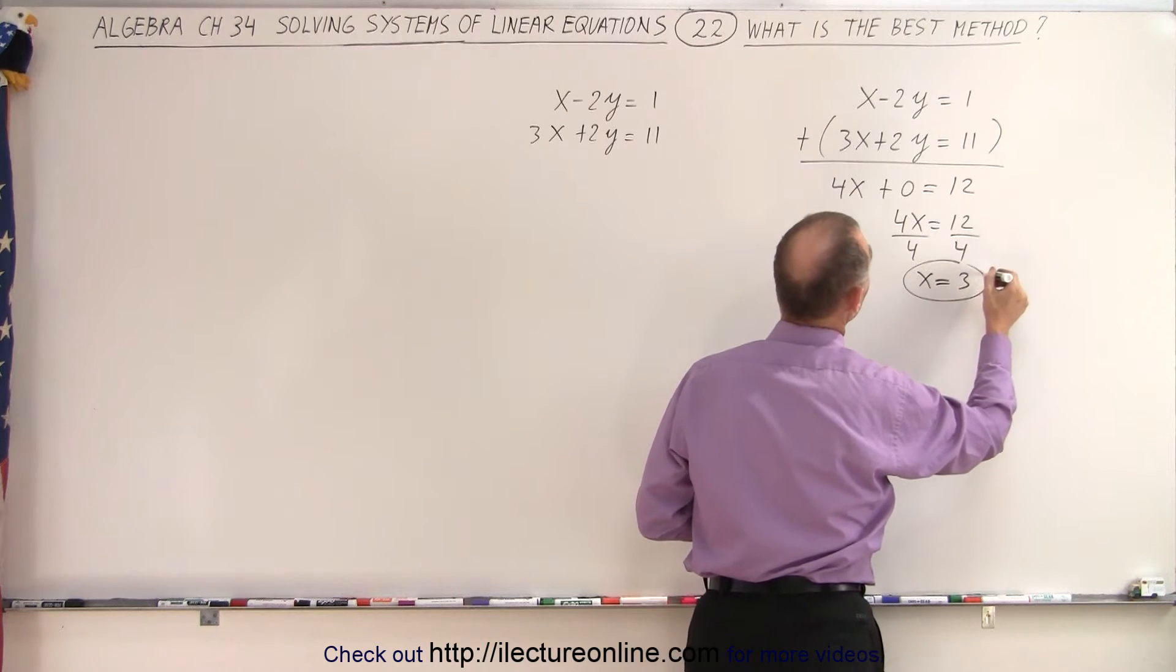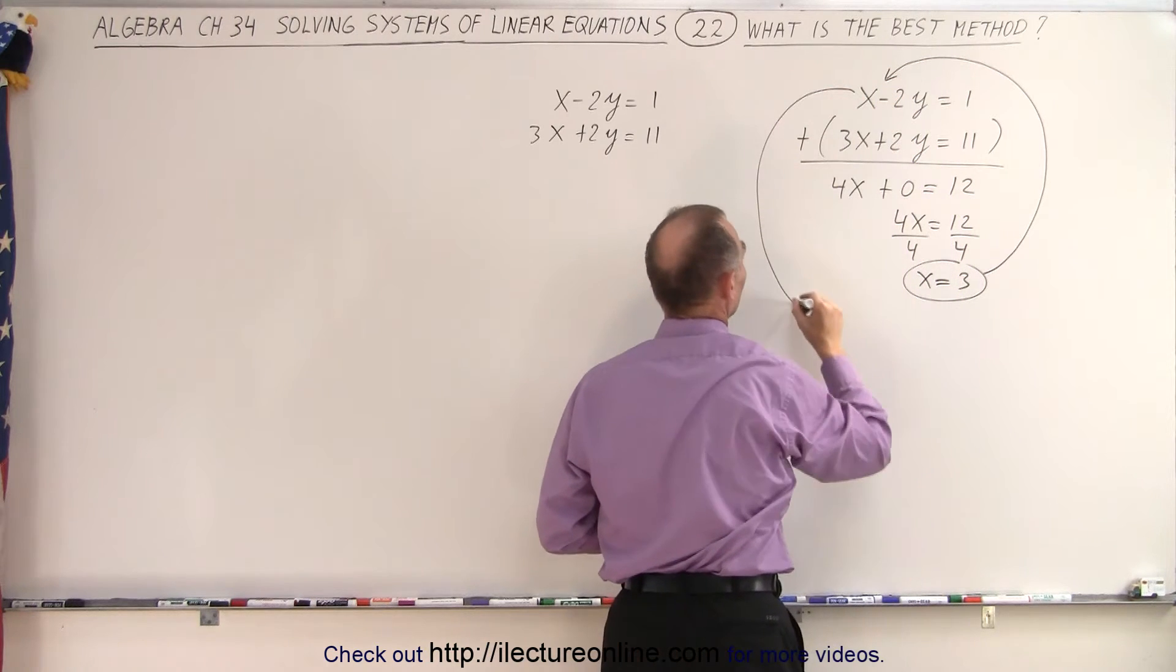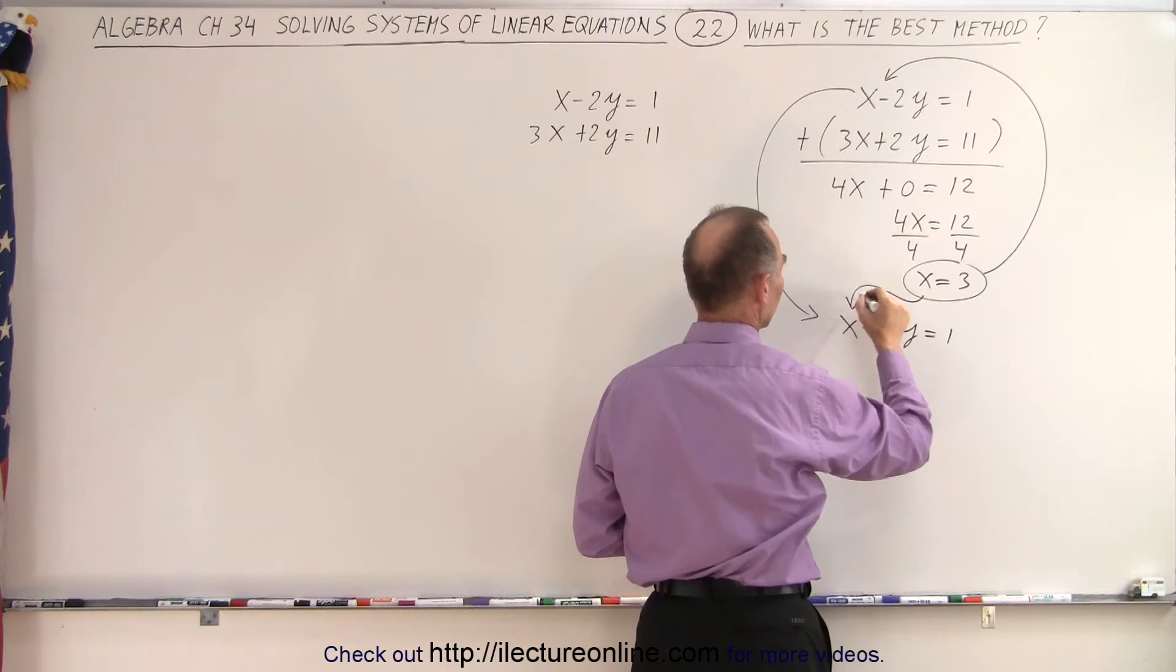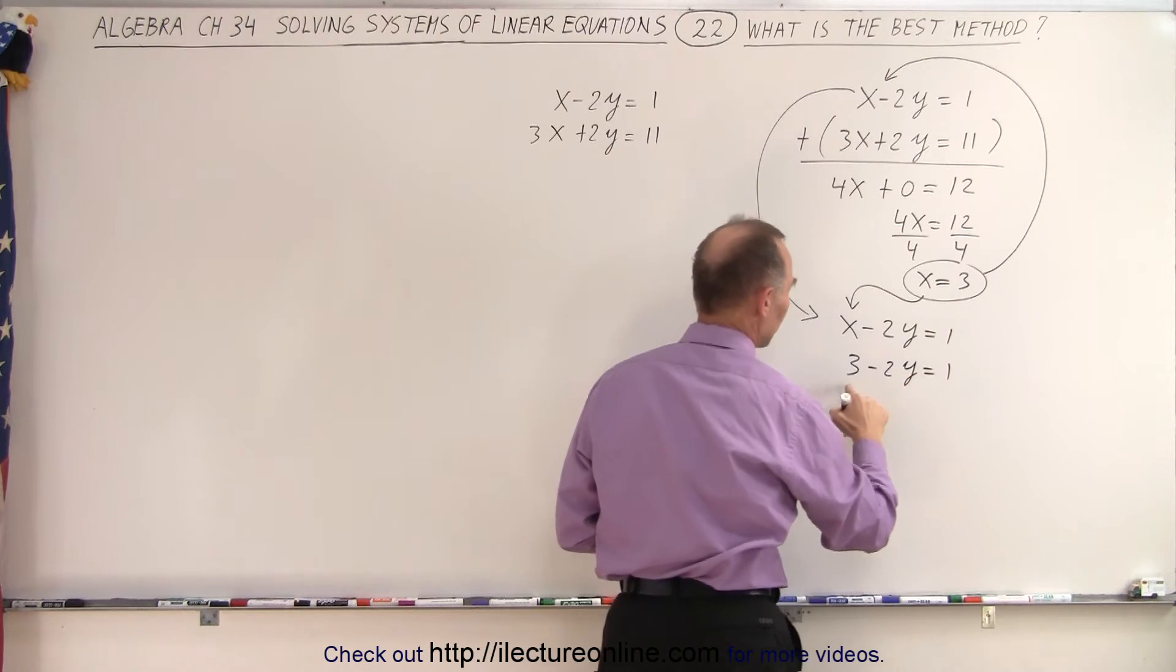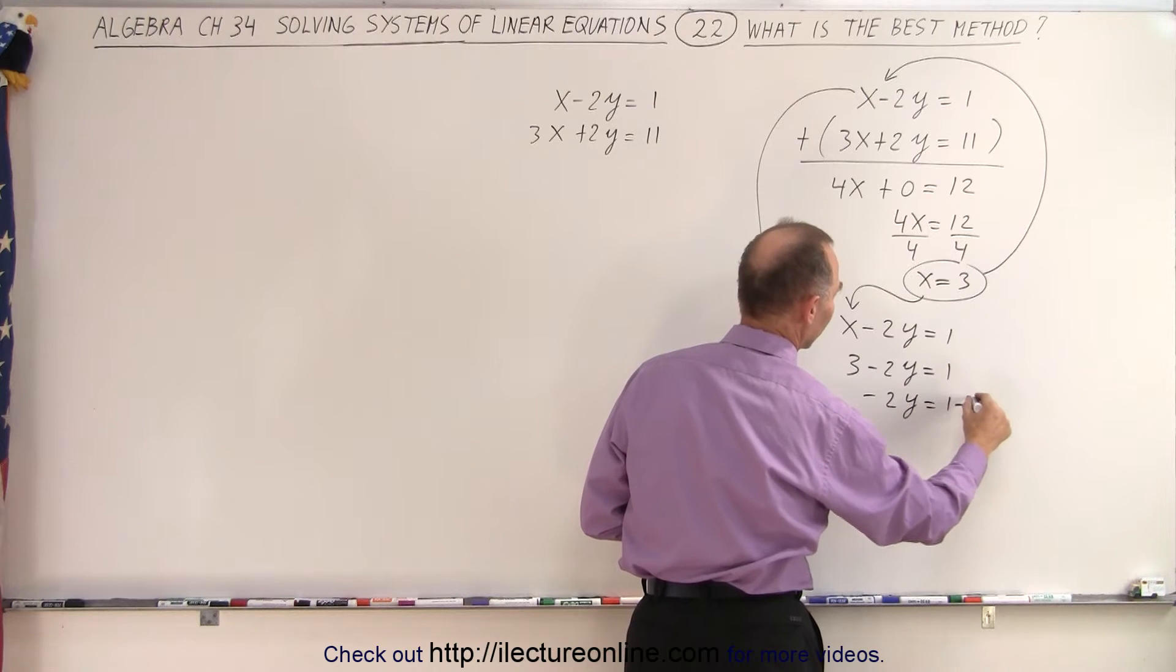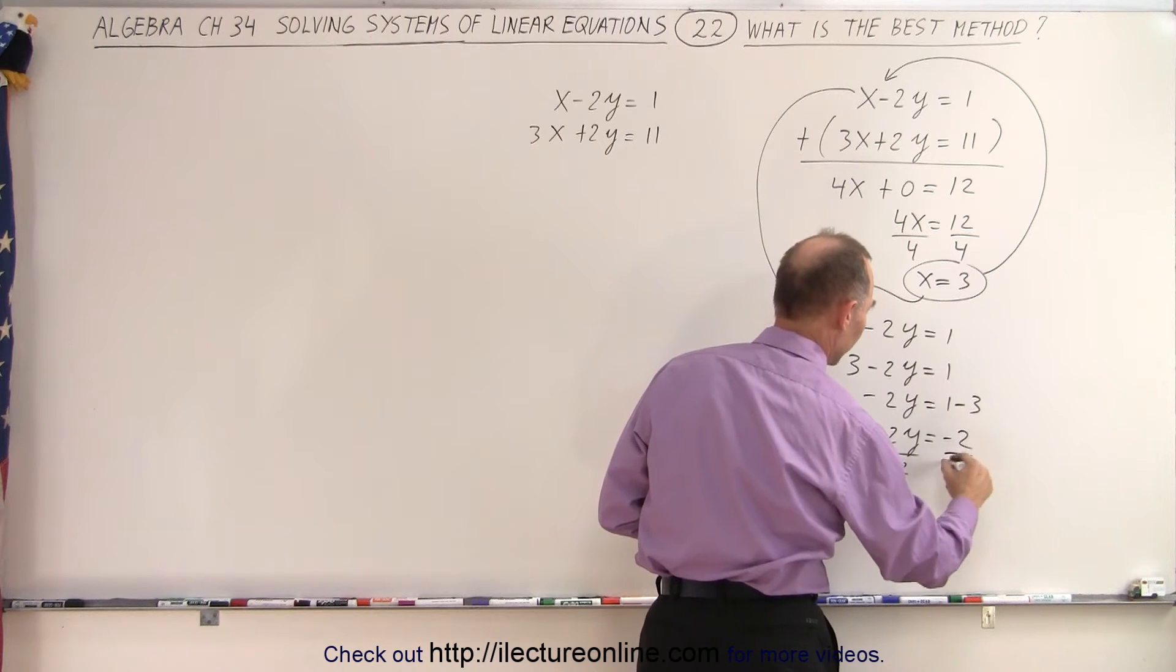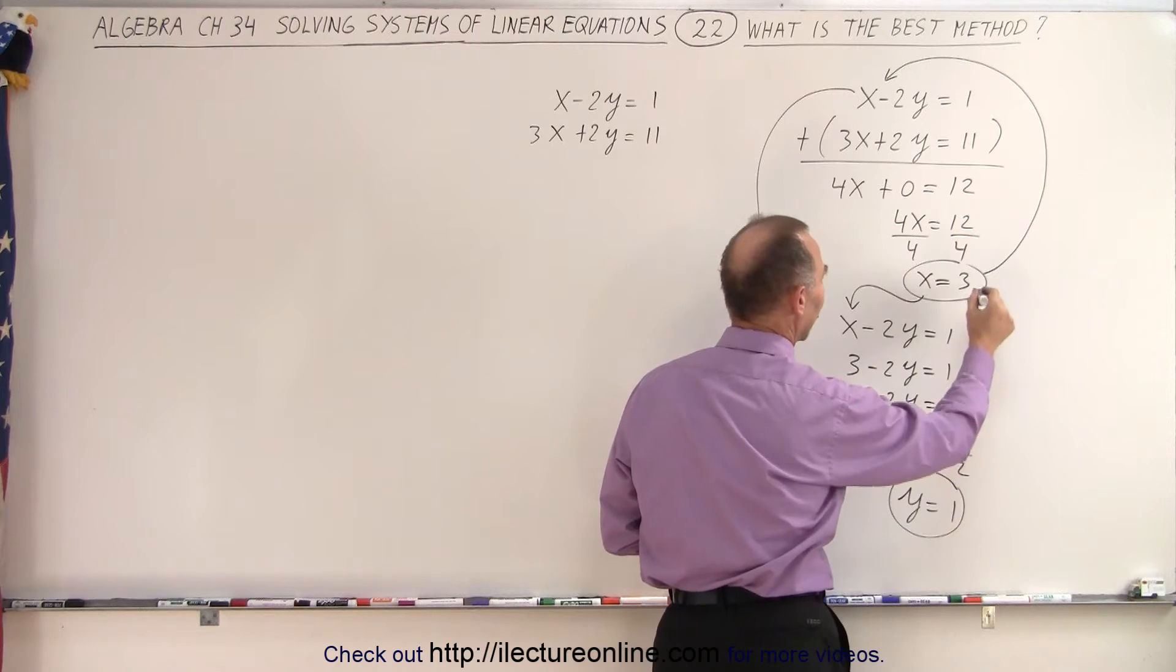Then I take that and plug that into one of my two equations. So maybe I'll plug it in here. So let's bring this down here. We get x minus 2y equals 1. So the x equals 3 goes in here. 3 minus 2y equals 1. I move the 3 to the other side. Minus 2y equals 1 minus 3. Minus 2y equals minus 2. Divide both sides by negative 2. And I get y equals 1. So the solutions are x equals 3, y equals 1.